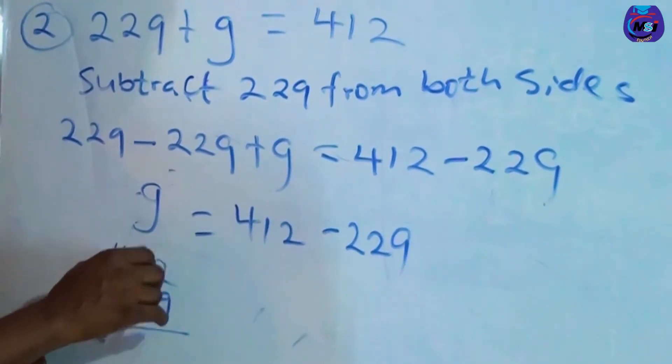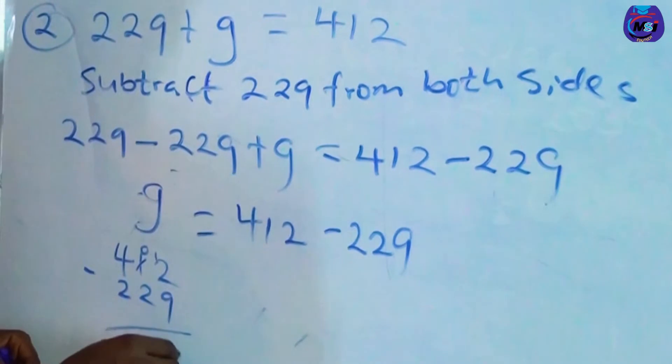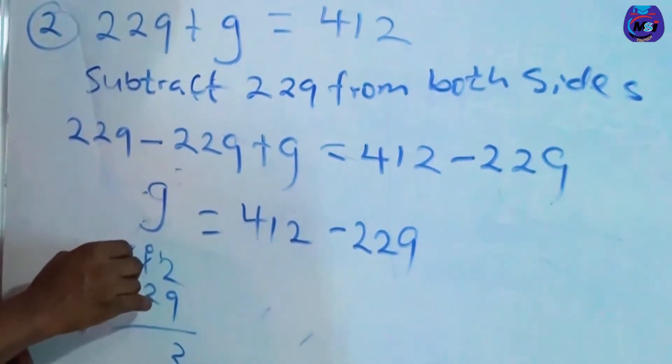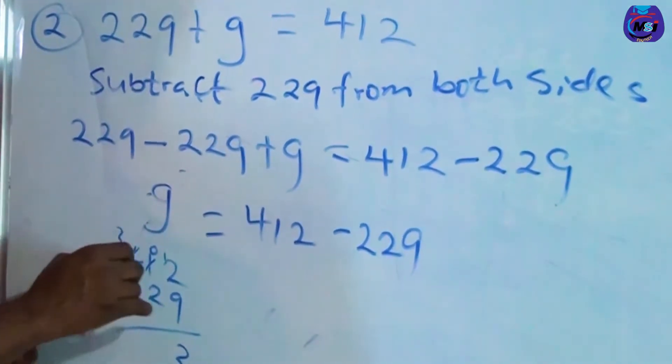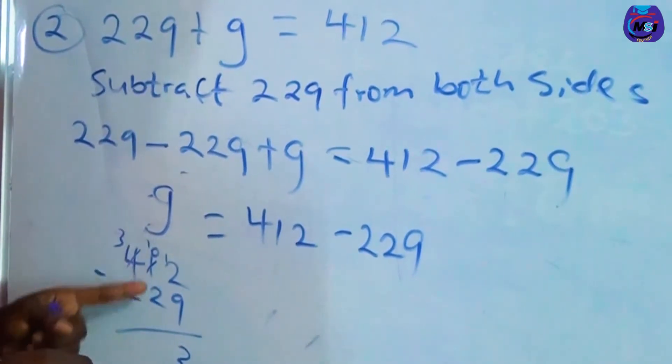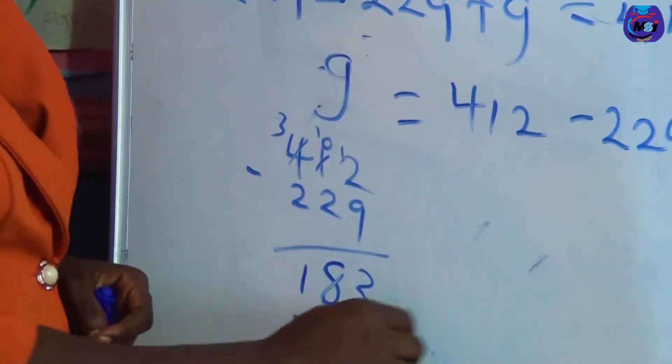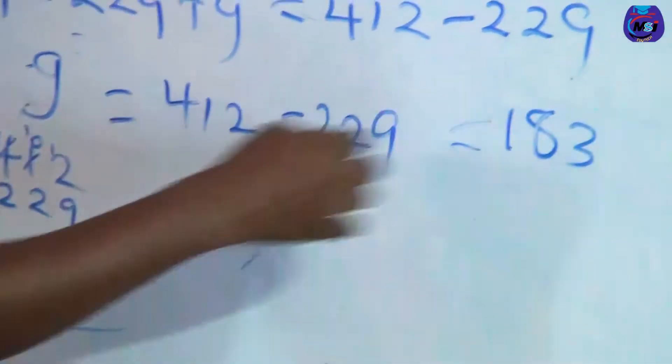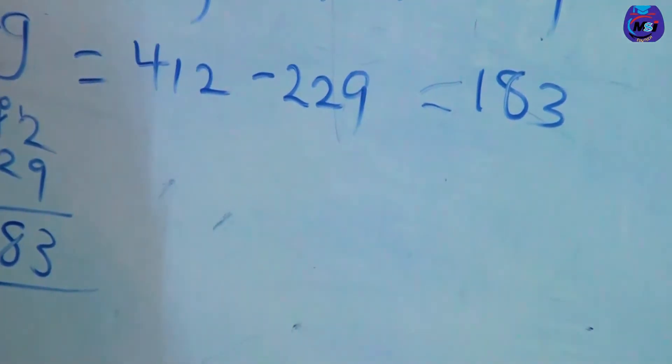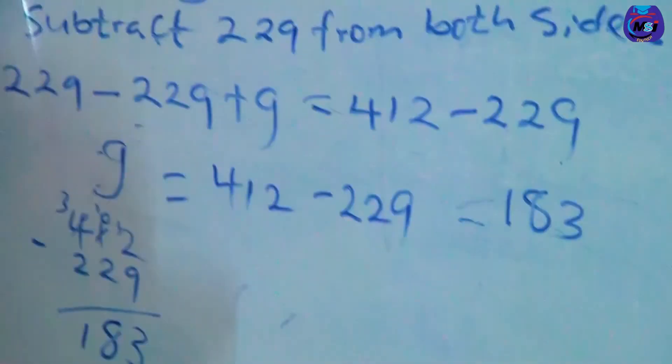g equals 412 minus 229. 412 minus 229: 2 minus 9, we need to borrow 1 from here, 1 is left with 0, 12 minus 9 is 3. The 0 borrows 1 from 4 making 3, here becomes 10, 10 minus 2 is 8. 3 minus 2 is 1. So the answer becomes 183. We have subtracted from this open sentence. Now let's go to the next example.